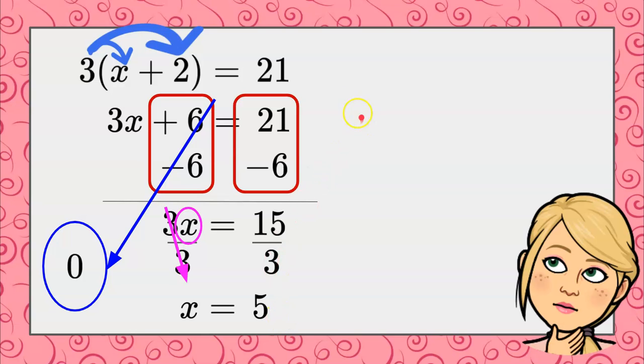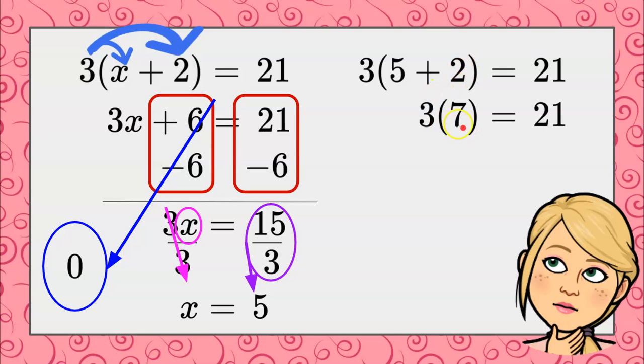Now let's not forget to check. I'm going back to my original equation and I'm replacing x with 5. So that gives me 3 times 5 plus 2. 5 plus 2 is 7. 3 times 7 is 21 and it checks, and my solution is indeed x equals 5.